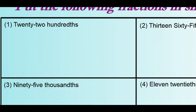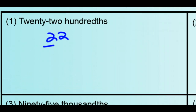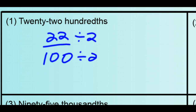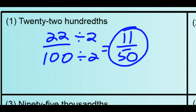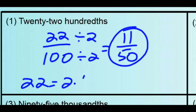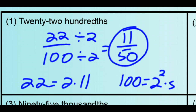For number 1, 22 over 100: the GCF of 22 and 100 is 2. Divide both by 2 and you get 11 out of 50, which is the simplest form. To verify: 22 is 2 times 11, and 100 is 2 squared times 5 squared — the only thing they share is one 2, so divide both by 2 and you get 11 out of 50.